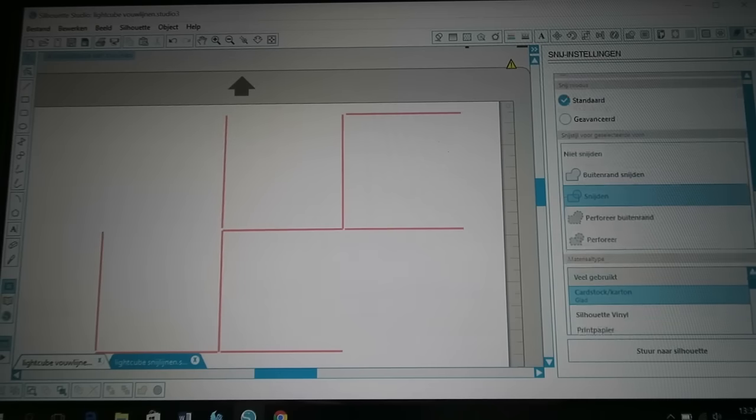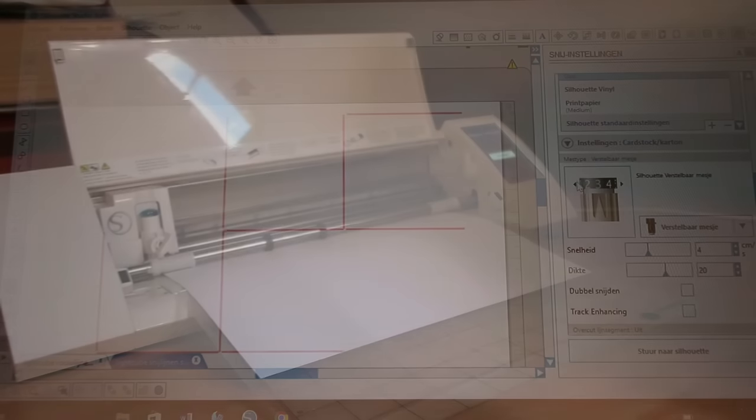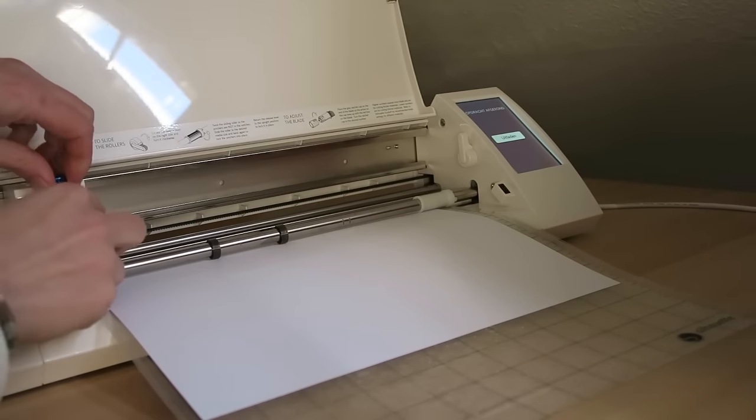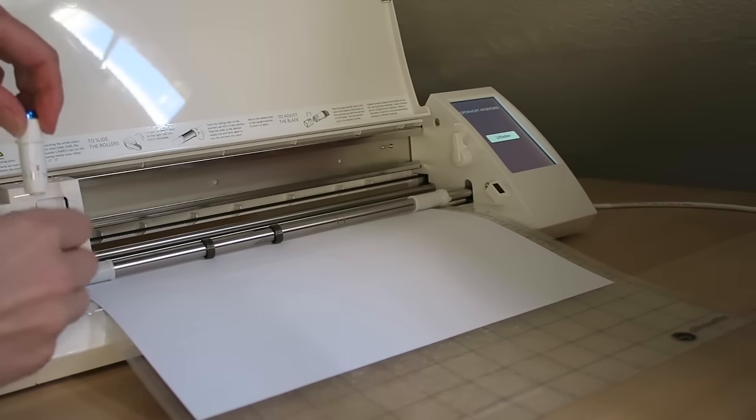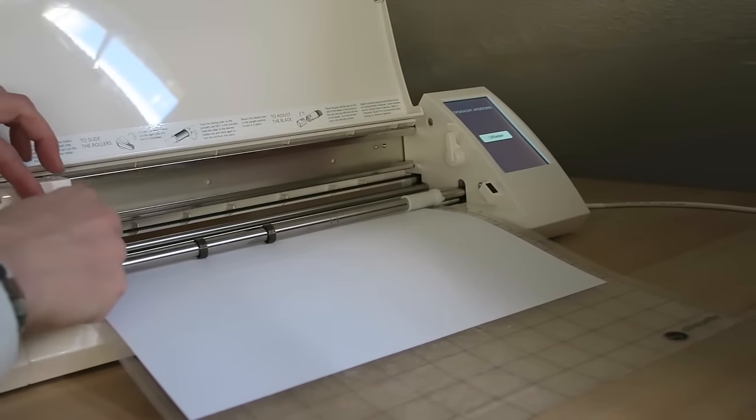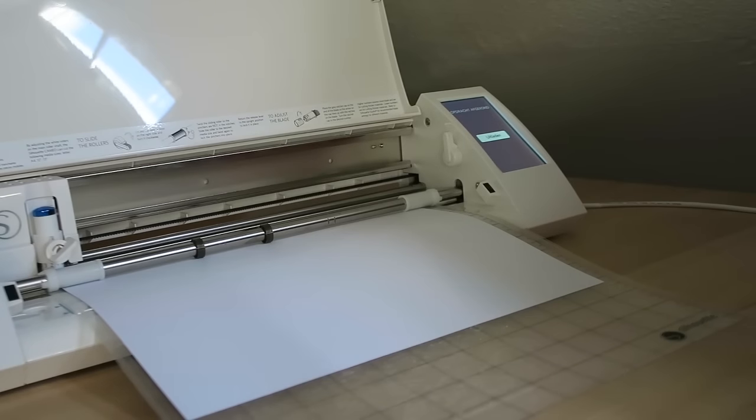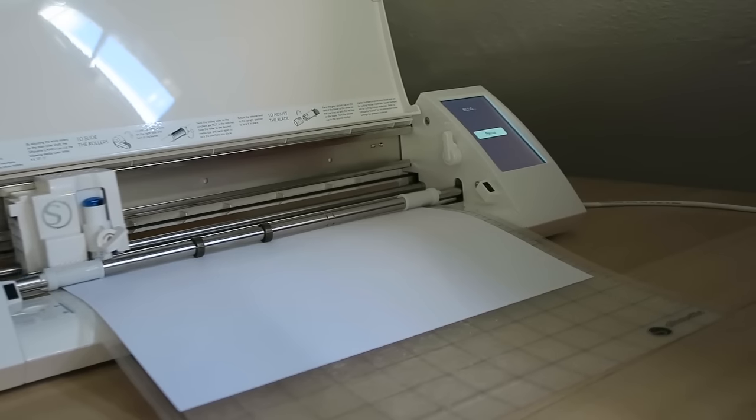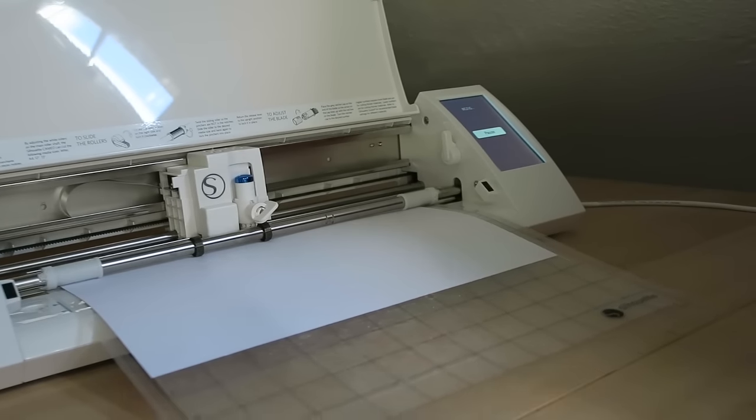Adjust your knife because these will be the folding lines of the cube. I don't want them to cut straight through, so I will put my knife on just knife number one. So now we can wait until it finishes again and then we can take the paper out of the machine.